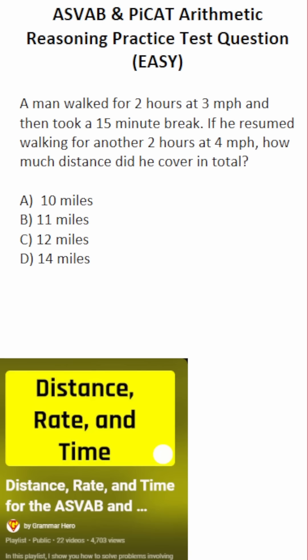This arithmetic reasoning practice test question for the ASVAB and PICAT says, a man walked for two hours at three miles per hour and then took a 15-minute break. If he resumed walking for another two hours at four miles per hour, how much distance did he cover in total?